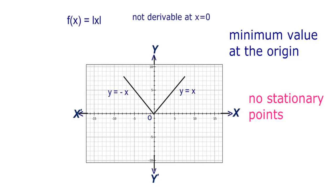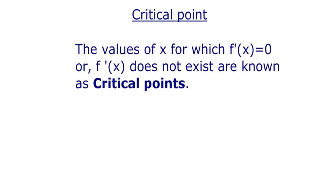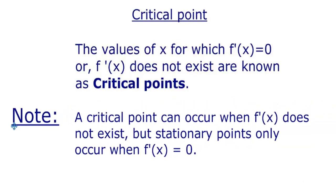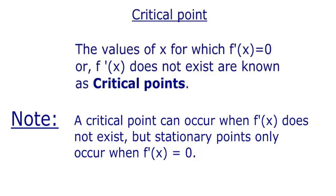Now we will discuss critical points. The values of x for which f'(x) is equal to 0 or f'(x) does not exist are known as critical points. This is where critical points and stationary points differ. A critical point can occur when f'(x) does not exist, but stationary points only occur when f'(x) is equal to 0.